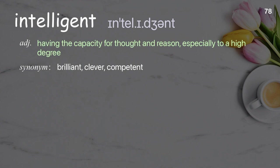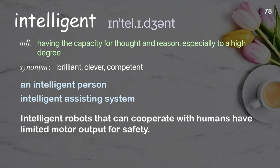Intelligent: having the capacity for thought and reason, especially to a high degree. Examples: an intelligent person, intelligent assisting system. Intelligent robots that can cooperate with humans have limited motor output for safety.